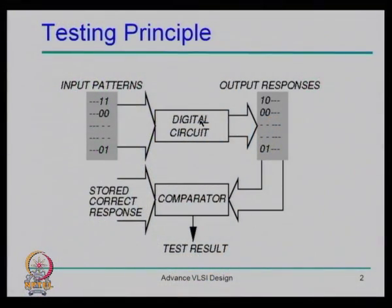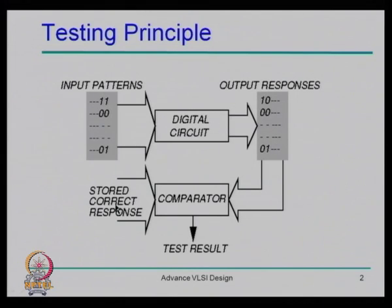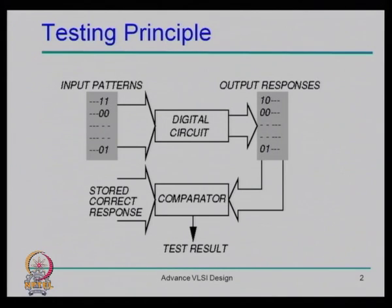As discussed in the last lecture, the typical test process starts as follows: you have a device or circuit under test, you have automatic test equipment, you apply test stimuli from the automatic test equipment to the circuit under test, collect the response, and compare it with the golden response stored on your tester. If it matches, the device is good; otherwise, the device is bad and we reject it. We only ship out good devices.